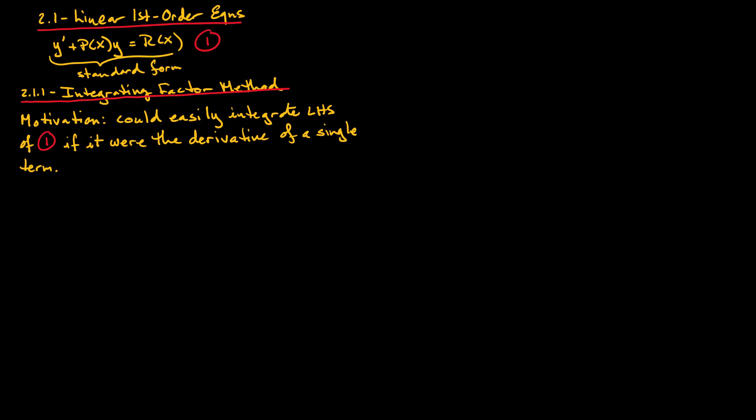The motivation for the integrating factor method is that we could easily integrate the left-hand side of equation 1 if it were the derivative of a single term. We can actually transform equation 1 into this suitable form — where the left-hand side is the derivative of a single term — by multiplying the equation by a function that we will call mu of x. Let's go ahead and do that right now.